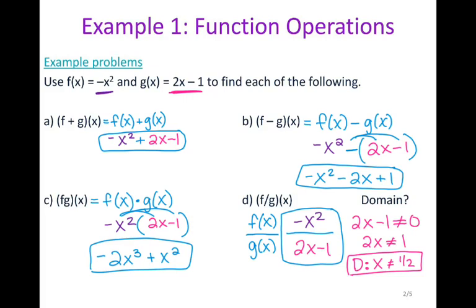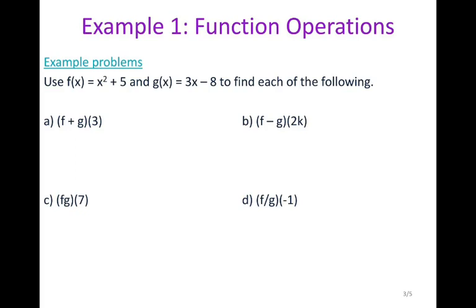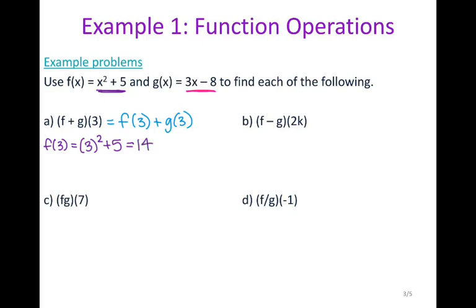Now let's look at function operations with numbers. For f plus g of 3, where f of x is x squared plus 5 and g of x is 3x minus 8, I calculate each individually. f of 3 is 3 squared plus 5, which is 9 plus 5 equals 14. g of 3 is 3 times 3 minus 8, which is 9 minus 8 equals 1. So f of 3 plus g of 3 is 14 plus 1, giving a final answer of 15.